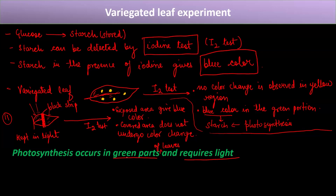From both experiments, the conclusion was that photosynthesis occurs in the green parts of leaves and requires light. The green color comes from chlorophyll, which is also essential for photosynthesis — if there is no chlorophyll, photosynthesis will not occur.